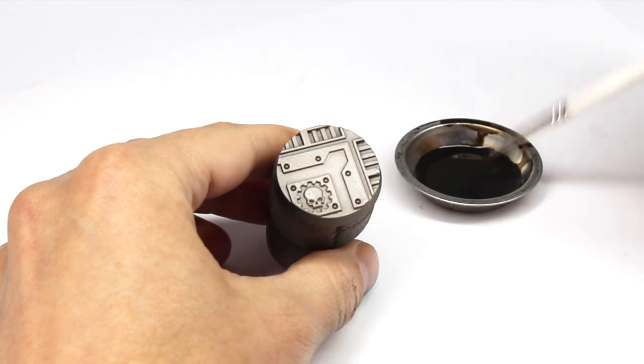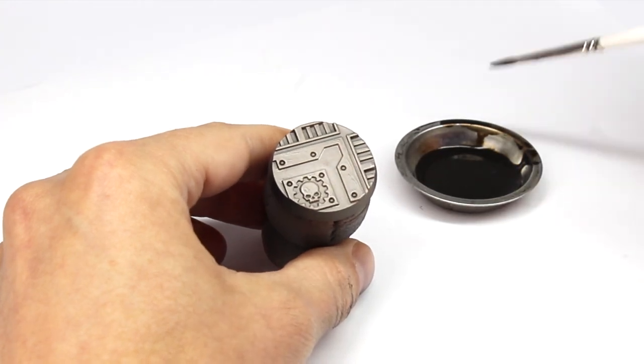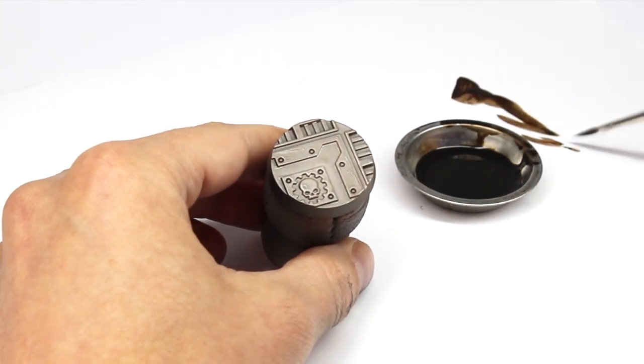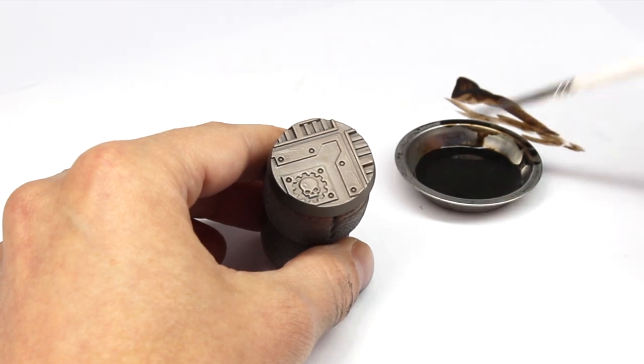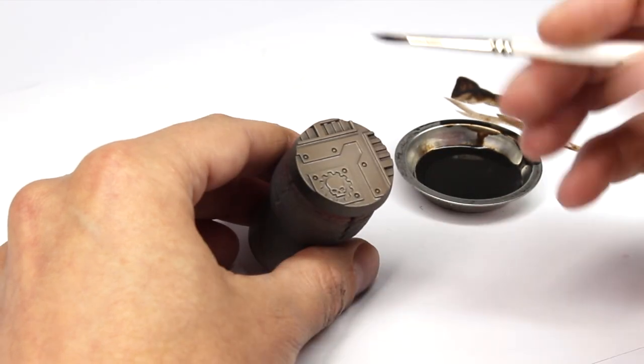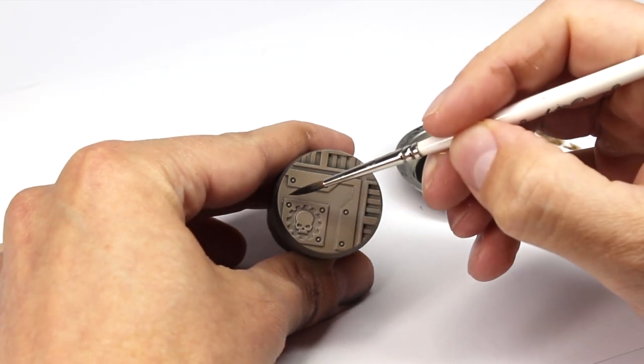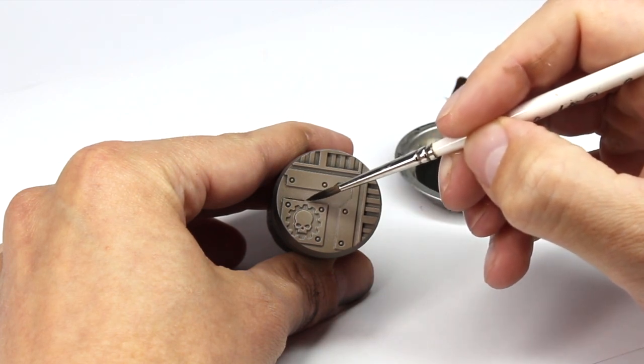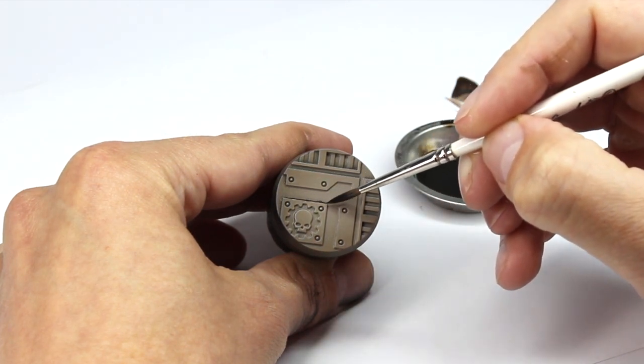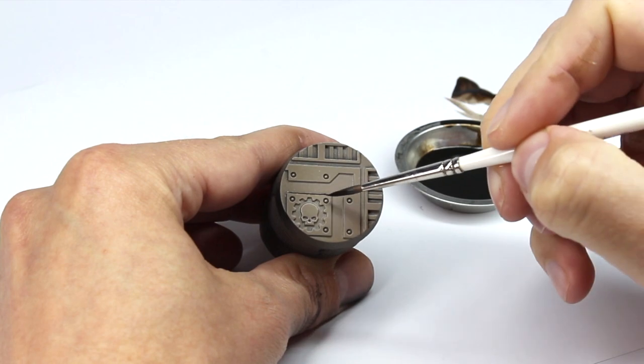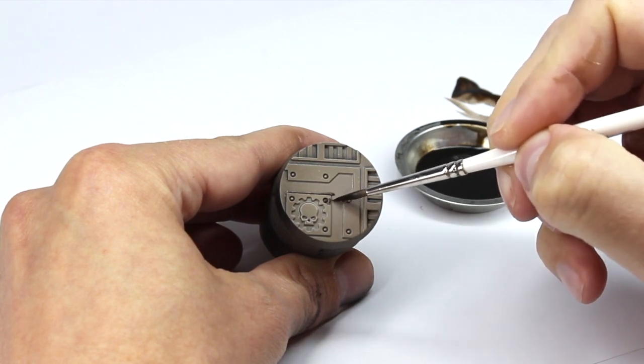When we come to apply it to the model we'll take off any of the excess paint, and we're still trying to be accurate and aiming for all those details that we want to make darker. But you can see already just by lightly touching against the recesses, the wash itself is beginning to move along them. You'll sometimes hear this called a recess wash.